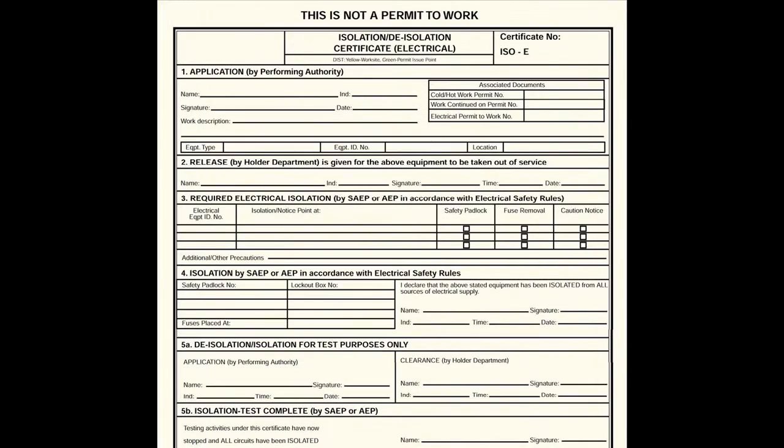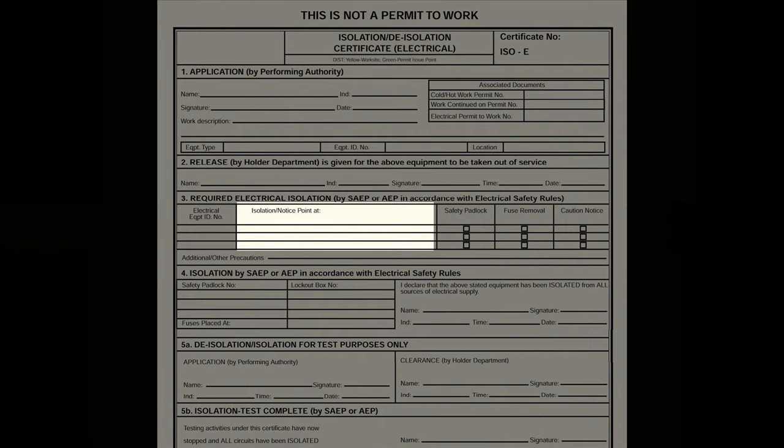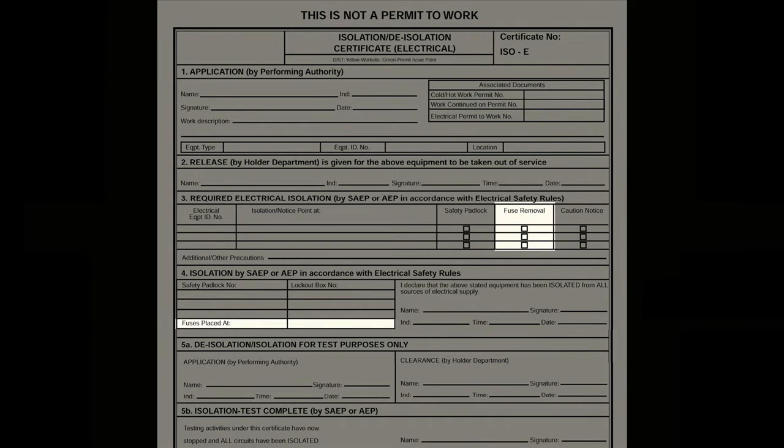The isolation control certificate is used when any isolation is going to take place on a system using high voltage. It is an additional precaution that requires information regarding lock off points, key numbers, fuses removed, and warning labels to be recorded.